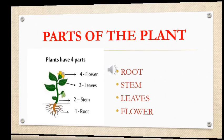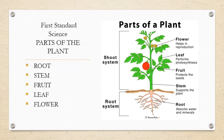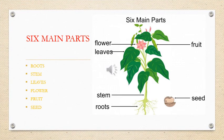Now we are going to learn one more part of the plants. We already learned roots, stem, leaves, flower, and fruit. Now we are going to learn six main parts of the plants: they are roots, stem, leaves, flower, fruit, and seed.